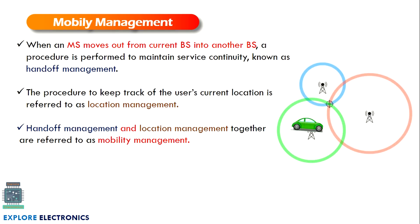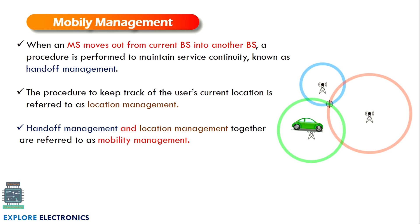Next, mobility management. When a mobile station moves out of the current base station's coverage to another base station — for example, when a car moves from one cell to another cell — there is a process called handoff. We need to maintain service continuously; this is called handoff management. The procedure to keep track of the user's location is called location management. Together, handoff management and location management are called mobility management.